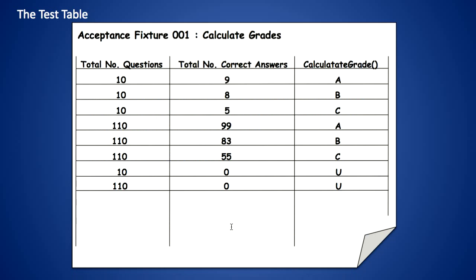To ensure that, we'll add that new functionality to our test table, which we can see in these lines here. These are our first rows, these are our second rows that we put in, and here we have the new rows: 10 questions with 0 correct answers is a U; 110 questions with 0 correct answers is also a U. We can now automate this test as well, which we'll take a look at in a later webcast using fit.